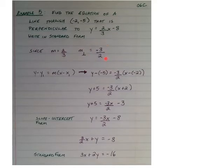Now we have the slope and a point that it passes through. So it would be good to use the point-slope equation. So if we plug in our values, negative 5 for y1, negative 3 halves for our perpendicular slope, and negative 2 for our x1.